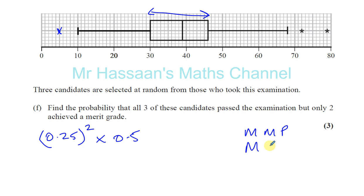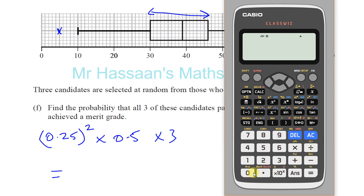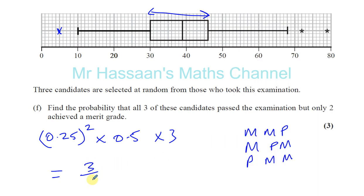And that should give us an answer, which is 0.25 squared times 0.5 times 3, which gives you 3 over 32. So that's the answer for part F. I hope that was clear, and I'll see you in the next question.